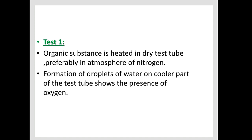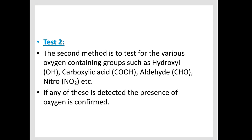Test one: the organic substance is heated in a dry test tube, preferably in an atmosphere of nitrogen. Formation of droplets of water on the cooler part of the test tube shows the presence of oxygen. Jab aap organic compound ko dry test tube mein place karke heat karenge, to upper cooler part pe water droplets appear honge — and that shows the presence of oxygen. That is one of the indirect methods for detection of oxygen.